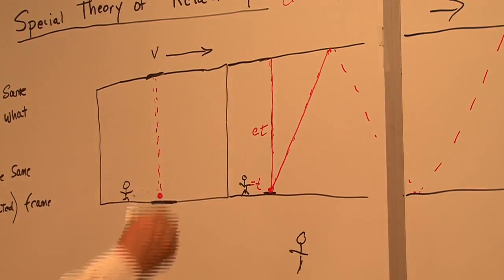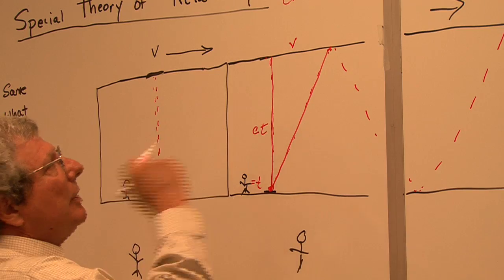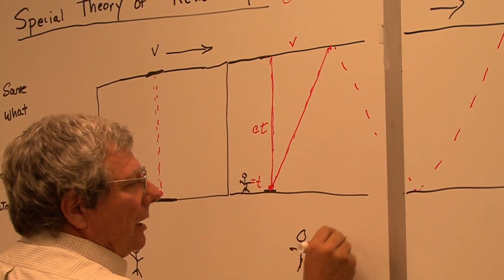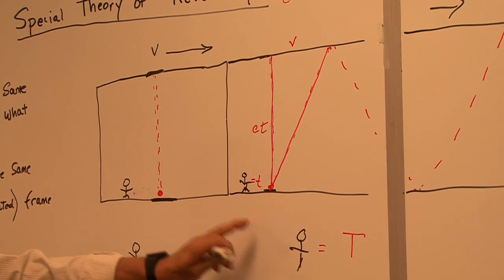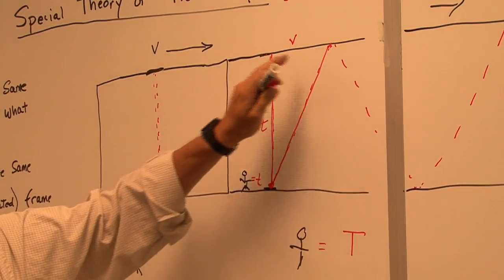The distance from this leg, the velocity is v, and the time of this would be the time of, and I'm going to use capital T for the time of the outside observer.